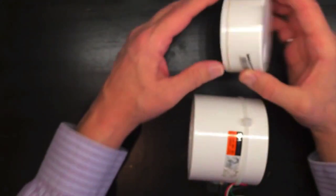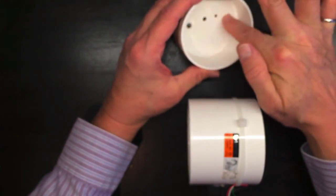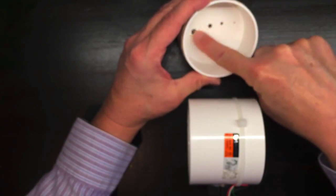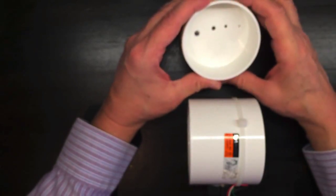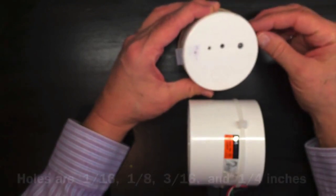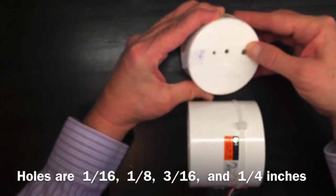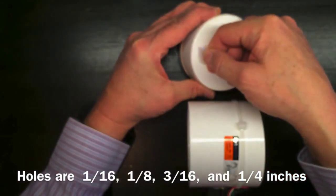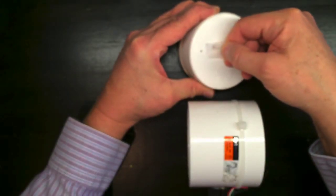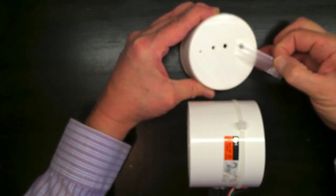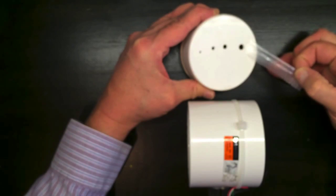At the other end, this cap has four holes in it of various sizes, and they've been countersunk a little bit just to smooth off the edges. On the outside, I've put a piece of Scotch Magic tape so that it seals up those holes so no air comes through. Later on, I can open one hole, two holes, three holes, or four holes, depending on how much flow I want to let out.